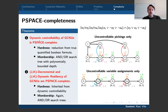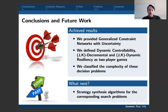Since the semantics of these games were defined as two-player games, it was quite straightforward to prove that deciding dynamic controllability and JK resiliency are PSPACE-complete problems. For dynamic controllability, hardness follows by reduction from true quantified Boolean formulas, which works even with both sources of uncertainty in isolation. For JK decremental resiliency, we proved the existence of an and-or search tree with polynomially bounded depth, and this argument also applies to dynamic controllability.